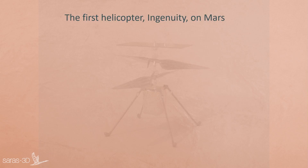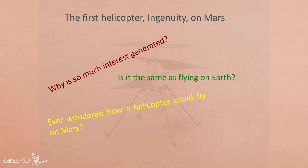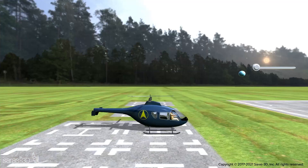Recently, the news of the flight of the first helicopter in January on Mars is all over the place — NASA's Ingenuity helicopter flies on Mars. Why is so much interest generated? What's so special about it? Ever wondered how a helicopter could fly on Mars? Is it the same as flying on Earth? Let's find out how NASA made it possible. To understand the concept in a simplified manner, we will start by taking a typical example of a ground helicopter.